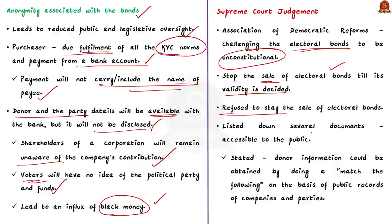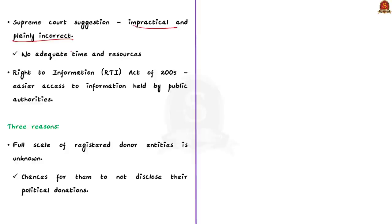The Supreme Court refused to stay the sale of electoral bonds. In its judgment, the Supreme Court listed down several documents and said that the purchase as well as encashment of bonds are always reflected in documents accessible to the public. The Supreme Court further stated that donor information could be obtained by doing a 'match the following' exercise on the basis of public records of companies and parties. According to the author, this move is seen as impractical and plainly incorrect, because no ordinary person has adequate time and resources to navigate documents and government websites or to examine income tax returns. The Right to Information Act of 2005 enables easier access to information held by public authorities.